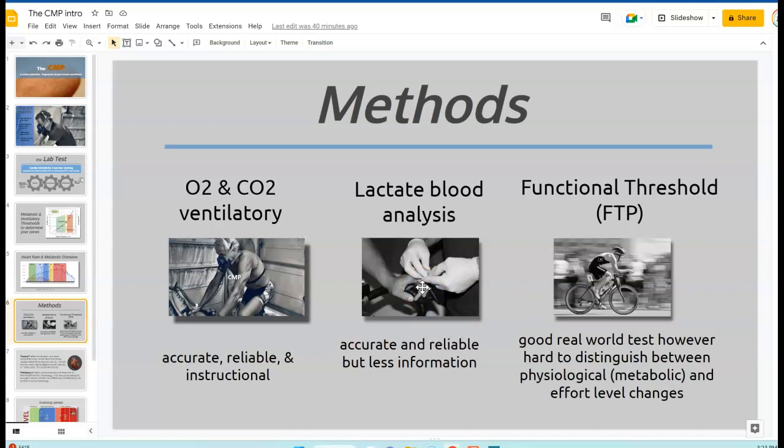The other use of the lactate assessment would be in the VLA max test. For the CMP assessment, you would go through this initially and then afterwards you do a 20 second time trial or sprint as hard as you can on the bike. You're going to take a lactate before that and then several lactate measurements afterwards, and we're going to identify how quickly that lactate accumulates in the blood.